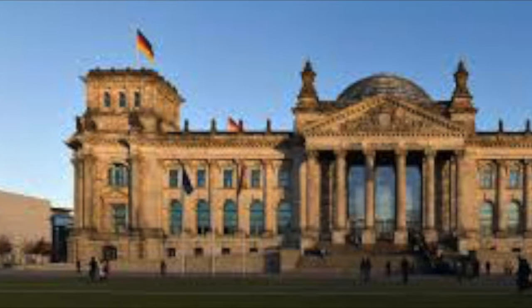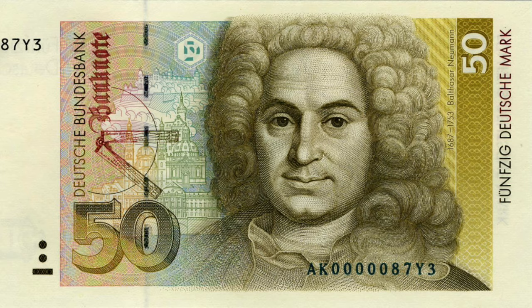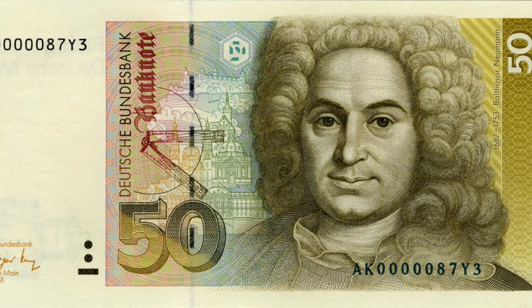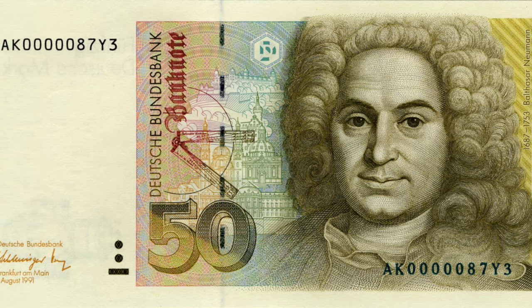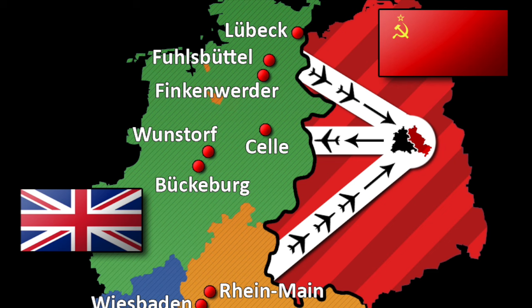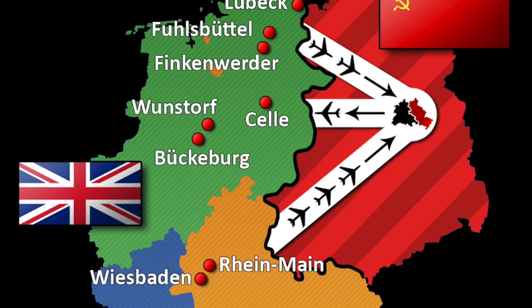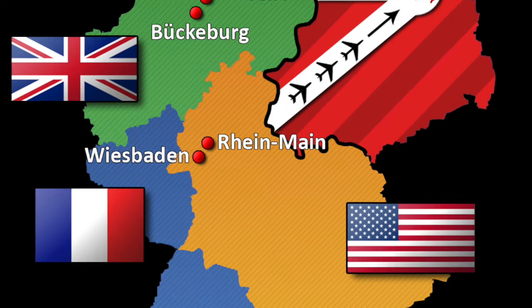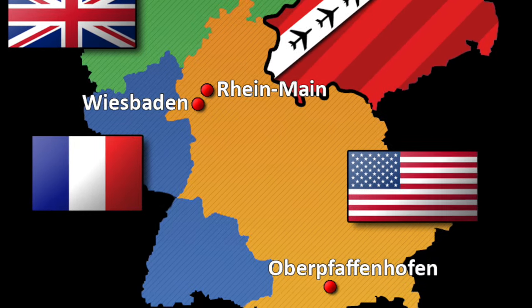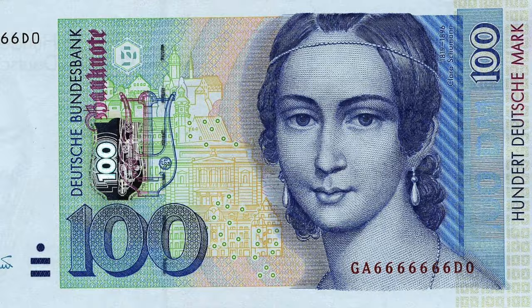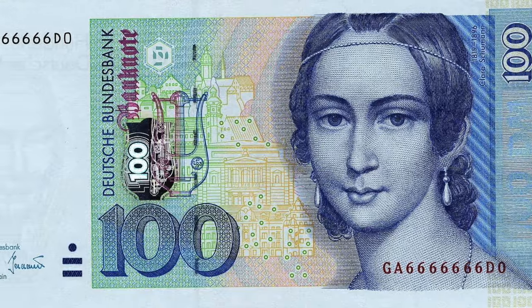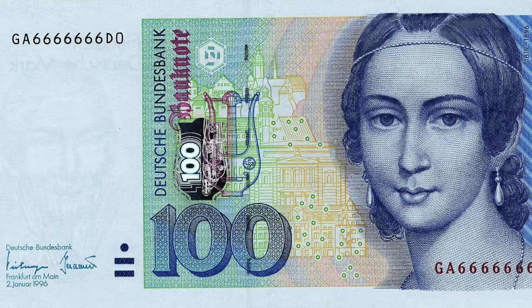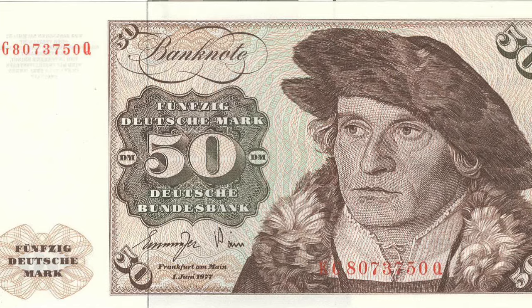On June the 24th of 1948, only six days after the new Western-backed Deutschmark was introduced, the Soviet Union blocked all road and rail links into Western Berlin from Western Germany. This was because they believed that the new currency went against the Potsdam Conference, so they ultimately banned the Deutschmark from East Germany and replaced it with the East German mark.